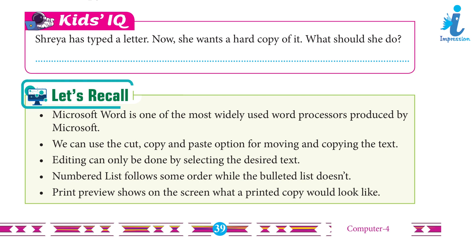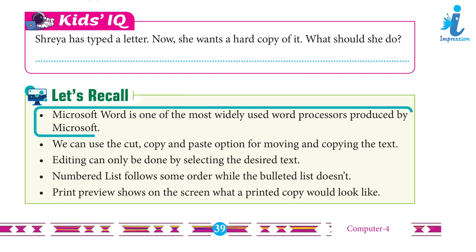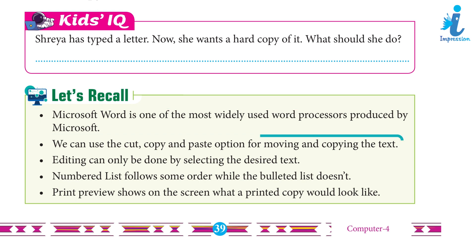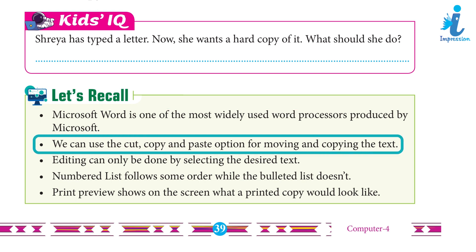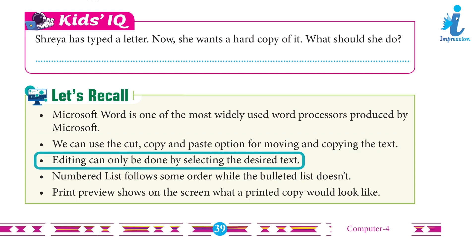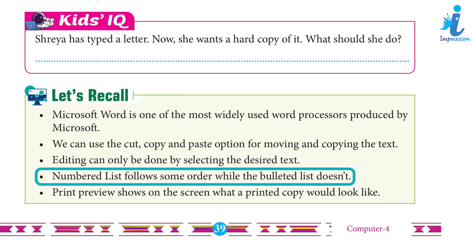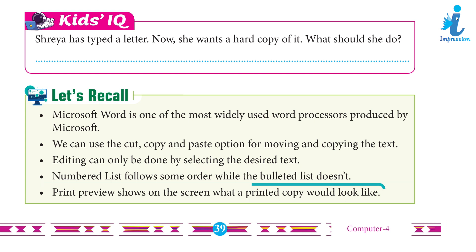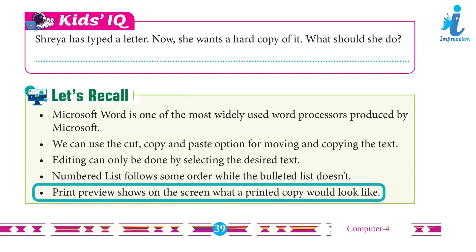Let's Recall: Microsoft Word is one of the most widely used word processors produced by Microsoft. We can use the Cut, Copy and Paste options for moving and copying text. Editing can also be done by selecting the desired text. A numbered list follows some order while a bulleted list does not. Print Preview shows on the screen what a printed copy would look like.